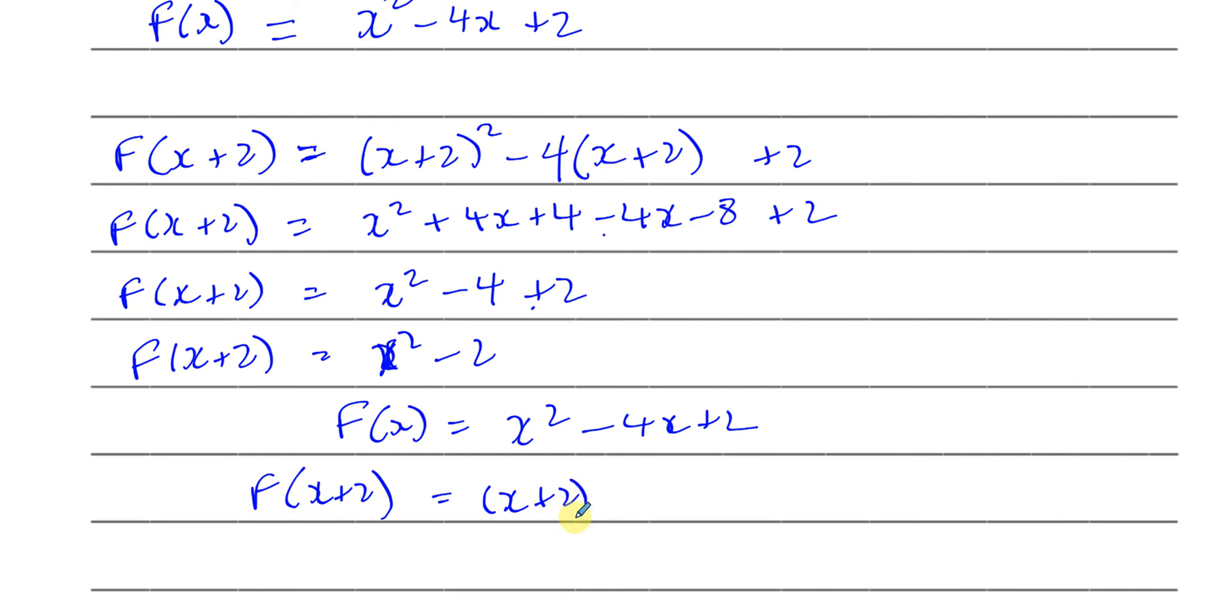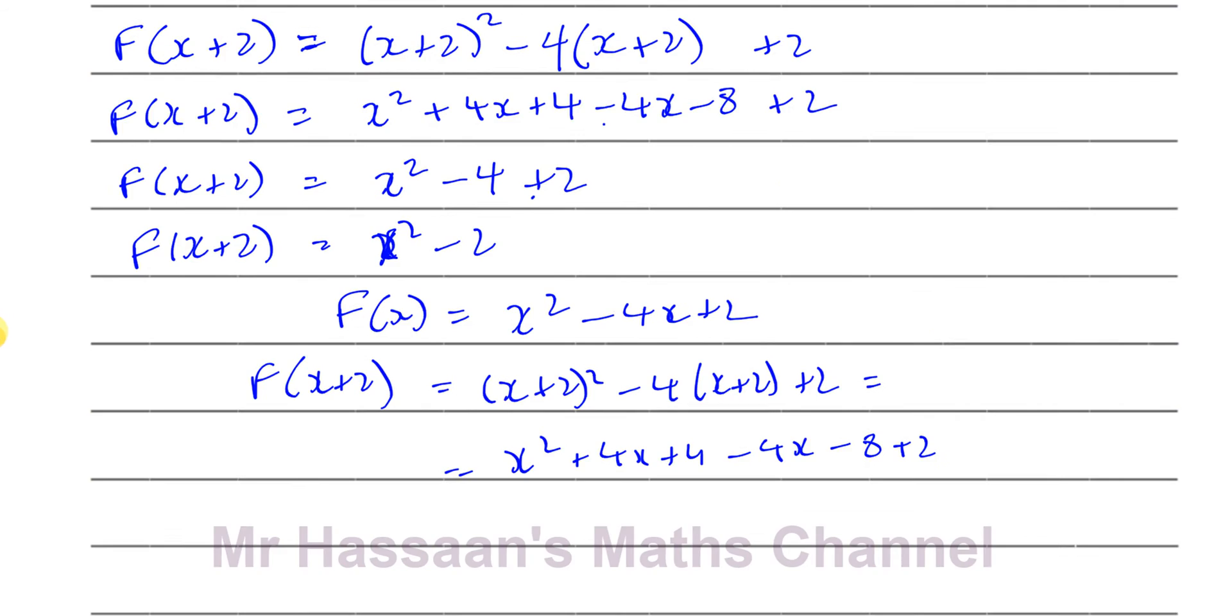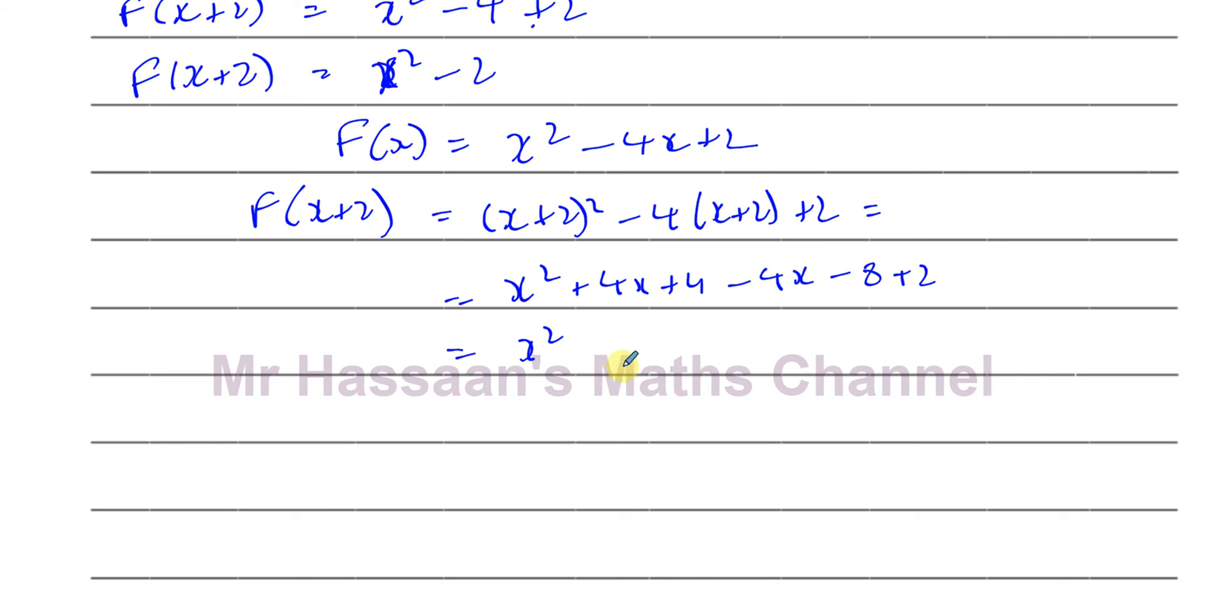That gives me (x + 2) squared minus 4 times (x + 2) plus 2, which gives me x squared plus 4x plus 4 minus 4x minus 8 plus 2, which gives us x squared, the 4x and the minus 4x cancel out. You've got 4 plus 2 is 6. 6 minus 8 is minus 2. So we can see that we've got the right expression for f of x. So we know that f of x now is equal to x squared minus 4x plus 2. But the question doesn't end there.